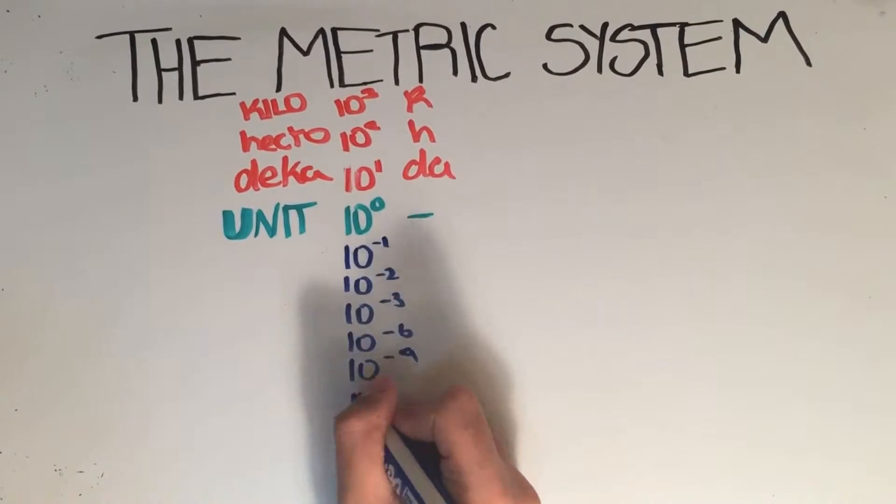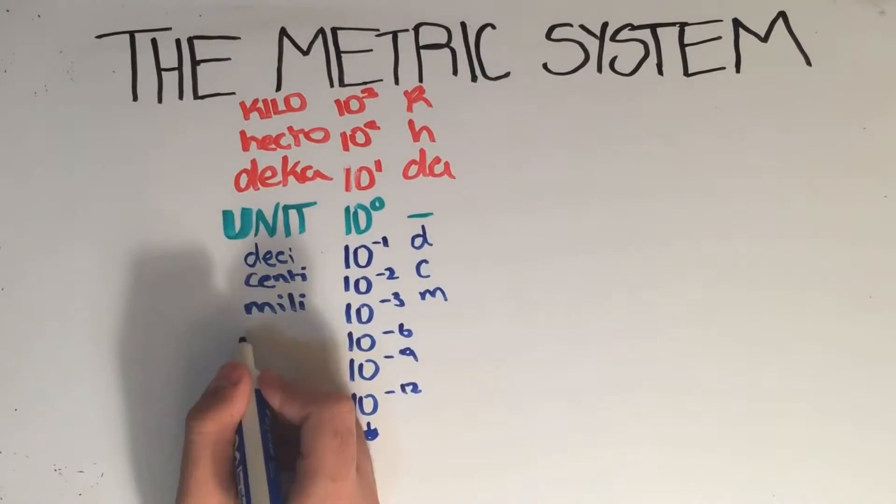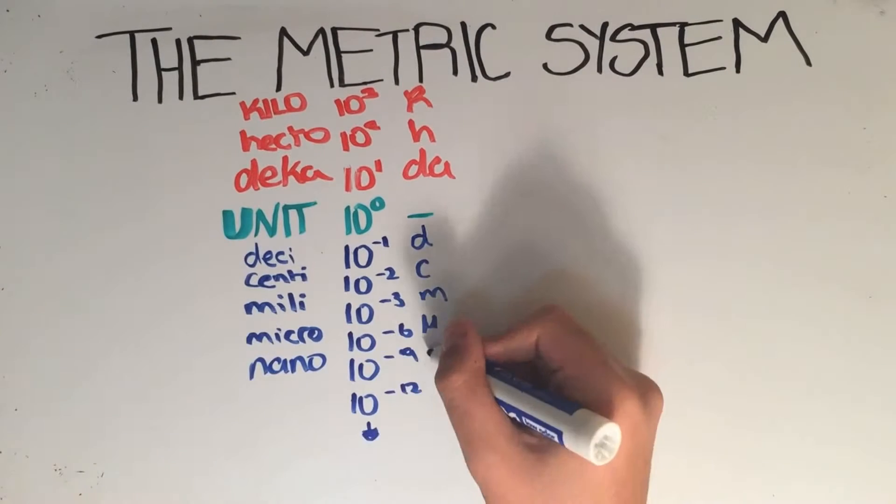On the other side of the spectrum, you've got the negative powers of 10, with the main ones being deci, centi, milli, micro, nano, and pico.